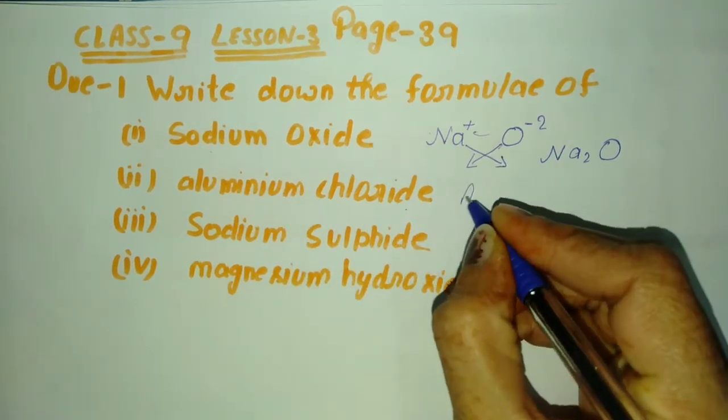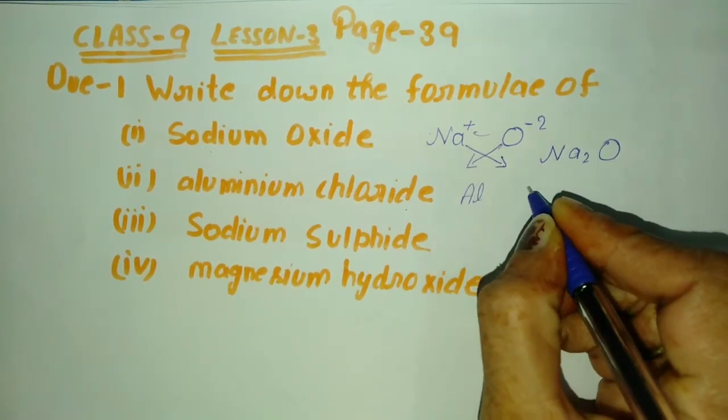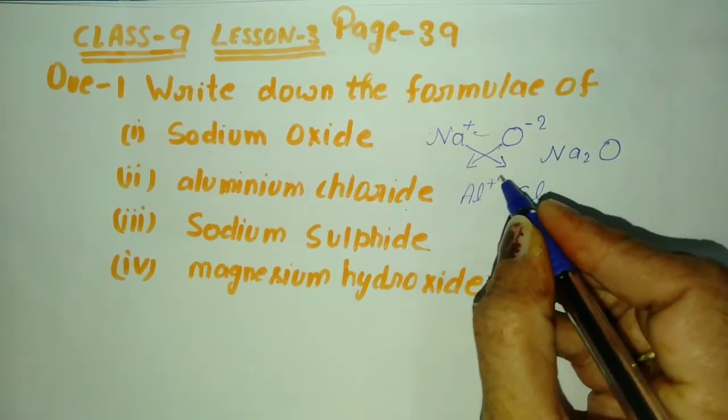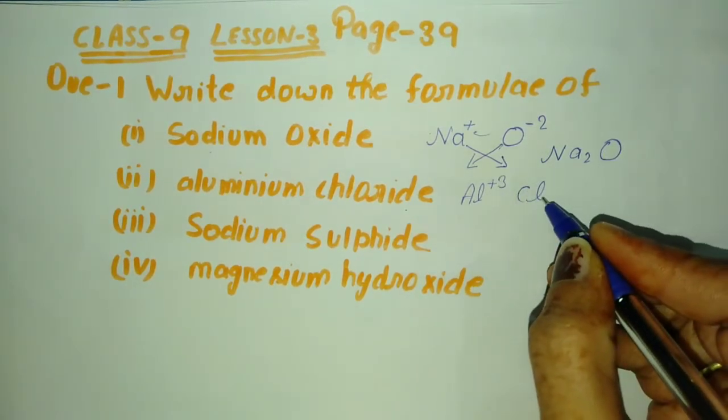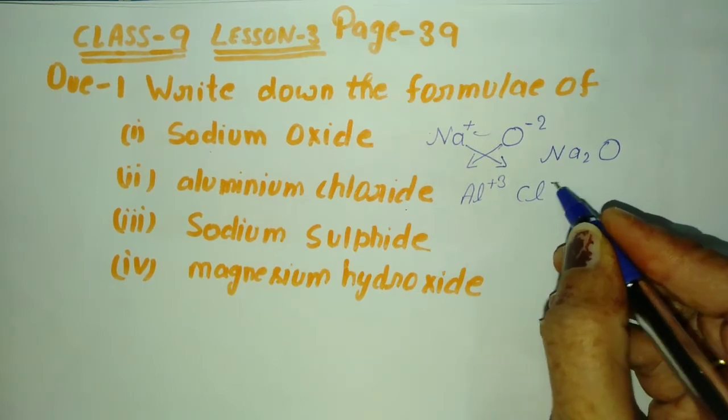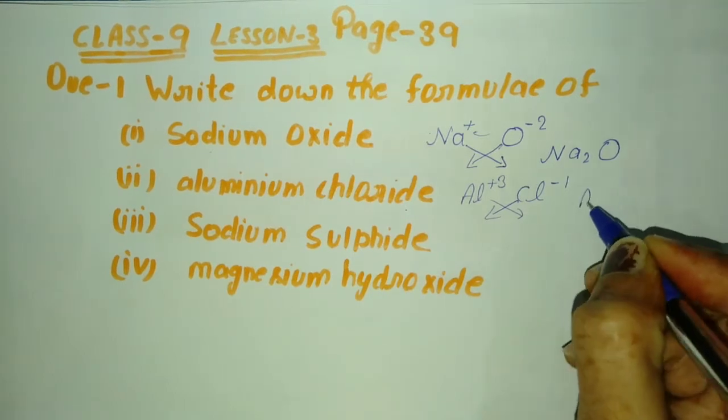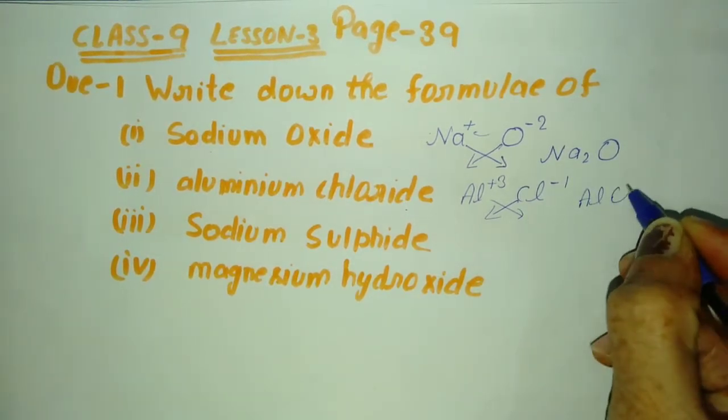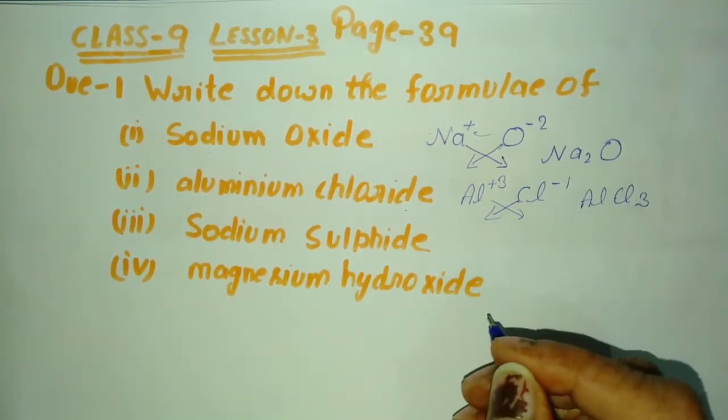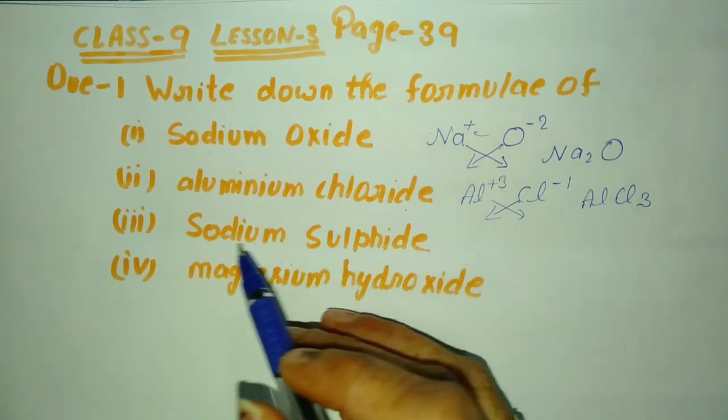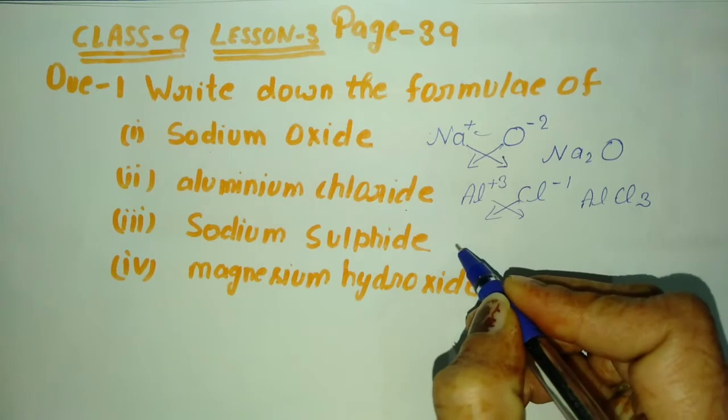Next is aluminum chloride. Aluminum is represented by Al and chloride means Cl. Aluminum has positive three charge and chlorine has minus one negative charge. This may be cross multiplied to get formula AlCl3.